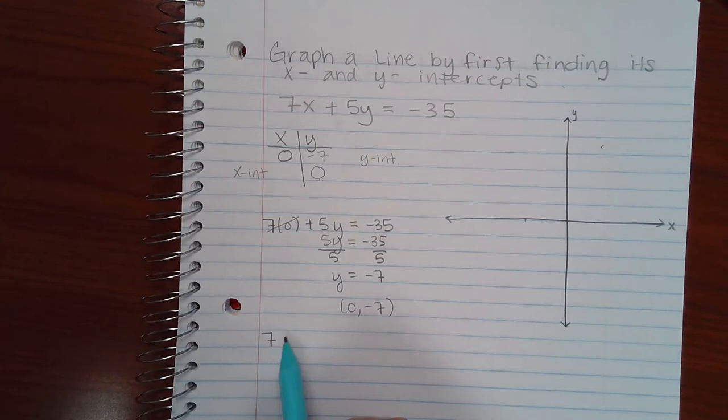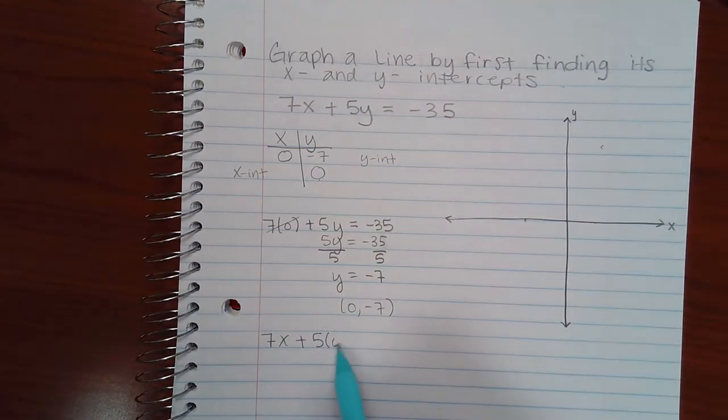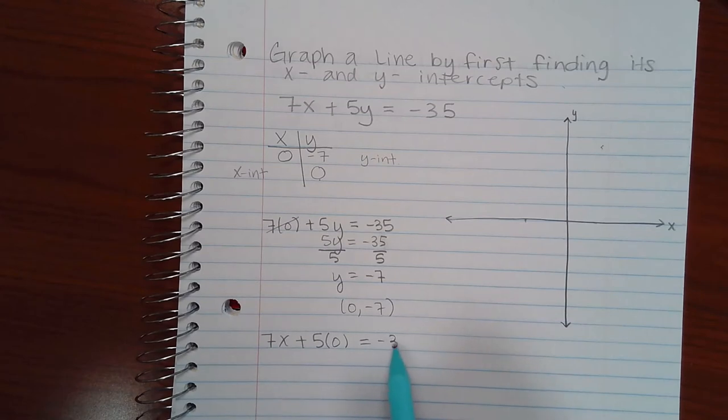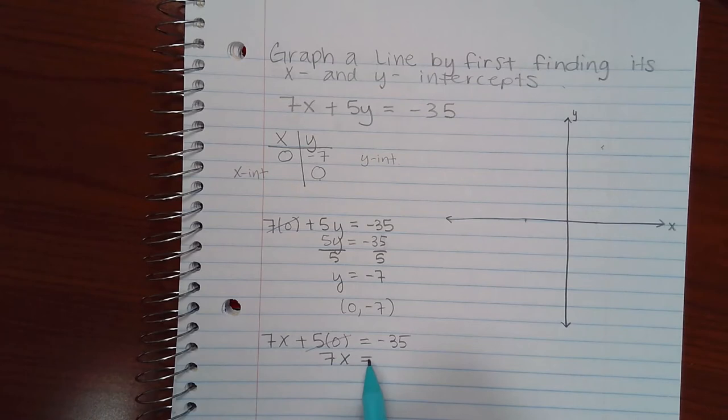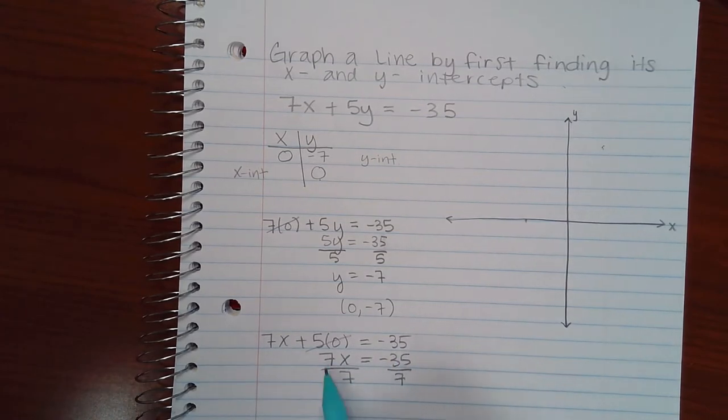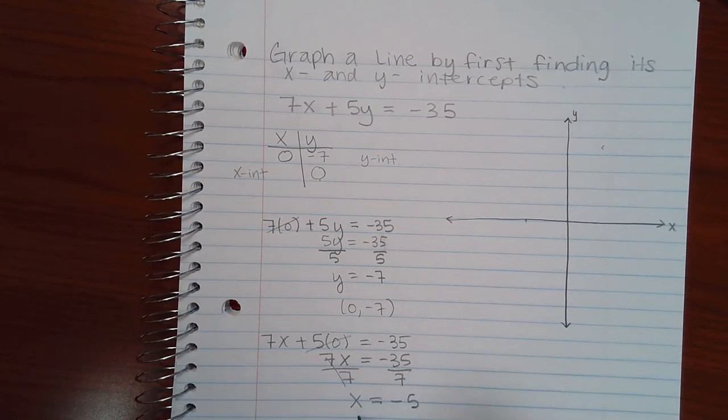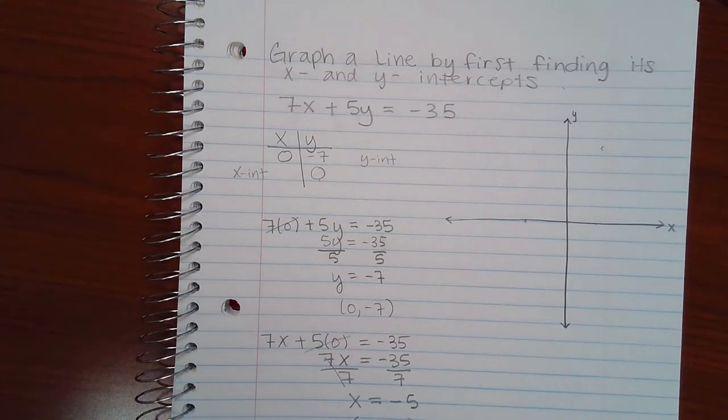Then I'm going to plug in zero for y. The same original equation, plugging in zero for y. This term ends up becoming zero and going away, and then I divide both sides by 7 to solve for x and I get that x is negative 5. So x is negative 5 when I plugged in zero for y.